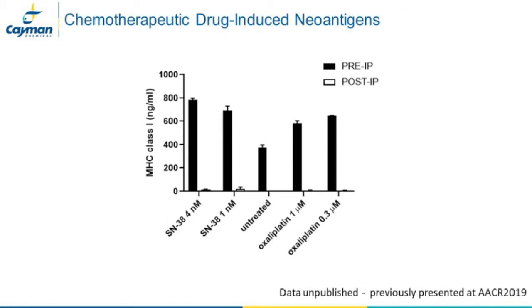In a study investigating whether commonly used chemotherapeutic drugs could affect the immunopeptidome and sensitize cancer cells to immune-mediated killing, when we tested MHC levels of treated cells by ELISA, all treatments increased class 1 expression compared to untreated cells. This information is interesting by itself, but also underscores that any potential increase in peptide numbers with treatment may be a result of greater MHC expression as opposed to generation of neoantigens.